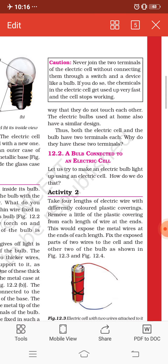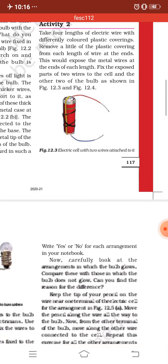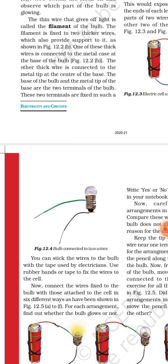Here you can see a bulb connected to an electric cell. To connect a bulb to an electric cell, we require one cell, four wires with the plastic cover removed, and one bulb. With the help of these four wires, one cell, and one bulb, we are going to draw some circuits to find out in which arrangement we can glow the bulb with the help of the electric cell.